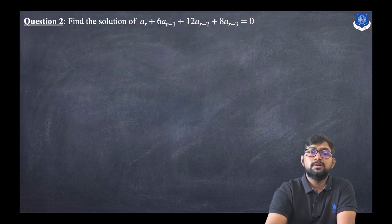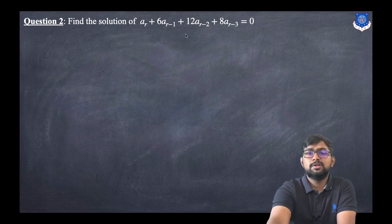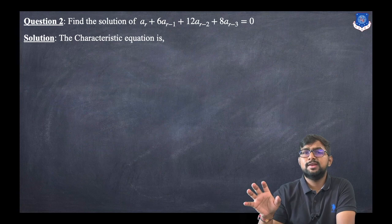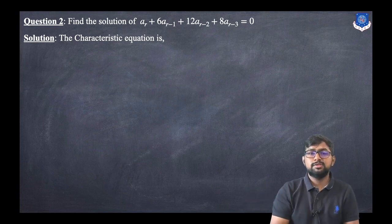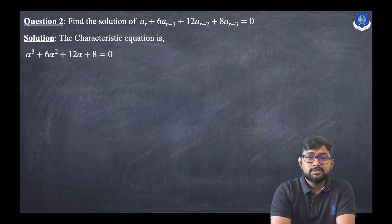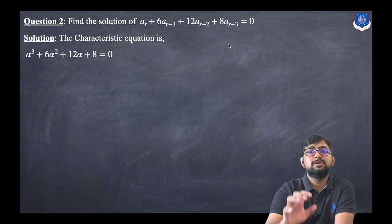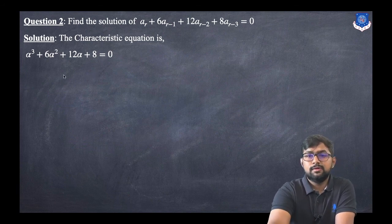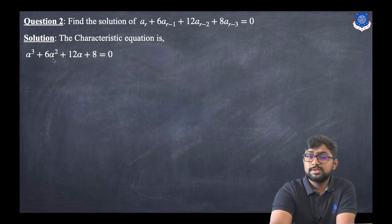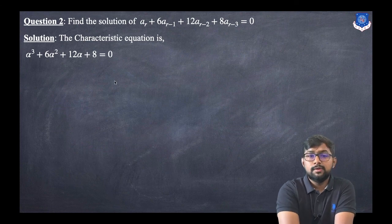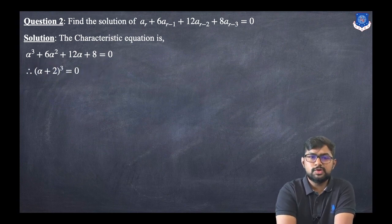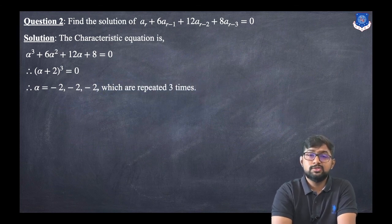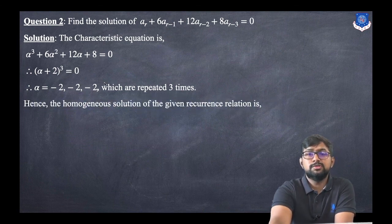Let us discuss another example: find the solution of a_r + 6 * a_{r-1} + 12 * a_{r-2} + 8 * a_{r-3} = 0. The right-hand side is 0, so it is homogeneous. The order is 3 (from r - 3), so the characteristic equation starts from α^3: α^3 + 6α^2 + 12α + 8 = 0. This factors as (α + 2)^3 = 0, so α = -2 repeated 3 times.